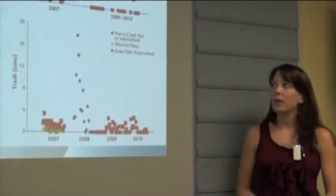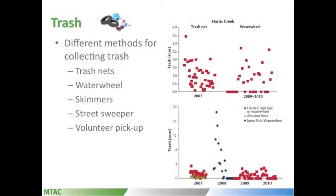Trash: there were different methods for collecting trash so we couldn't actually roll it up and score it. The different methods include trash nets, which are put in front of the storm drain outfalls, so it collects the trash before it gets into the inner harbor. The water wheels actually scoop trash out of the water and deposit it into a receptacle. Skimmers are people on boats that go out and skim the water. They also have street sweepers and volunteer pickup days. But I wanted to put these graphs up here to just show that obviously trash is a problem when you have tons of trash being collected by the trash net and the water wheel. That's coming down from the city through the storm drains and then coming out into the inner harbor. This doesn't even measure the trash that's on the ground - this is actually the stuff that's coming into the water.